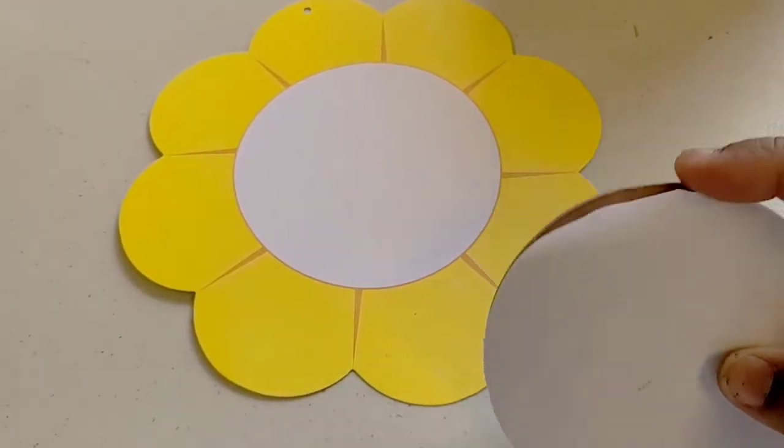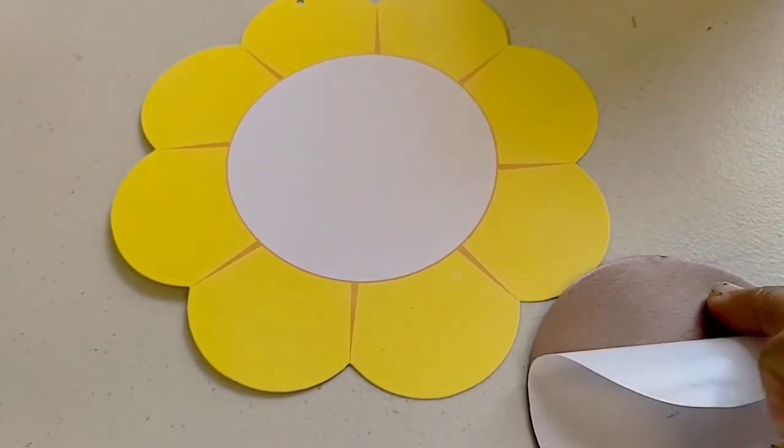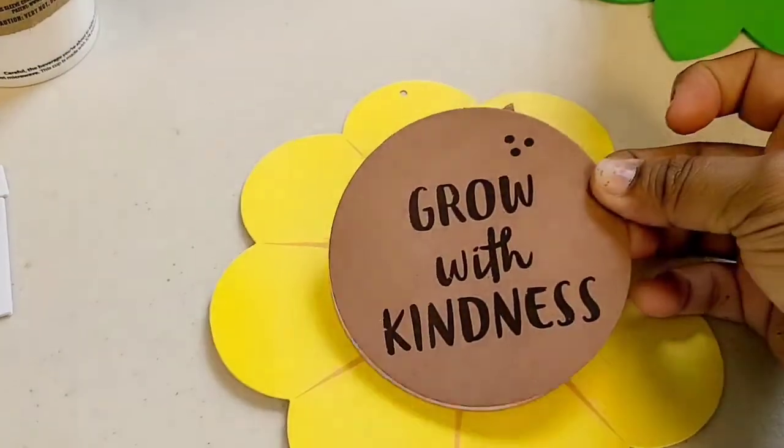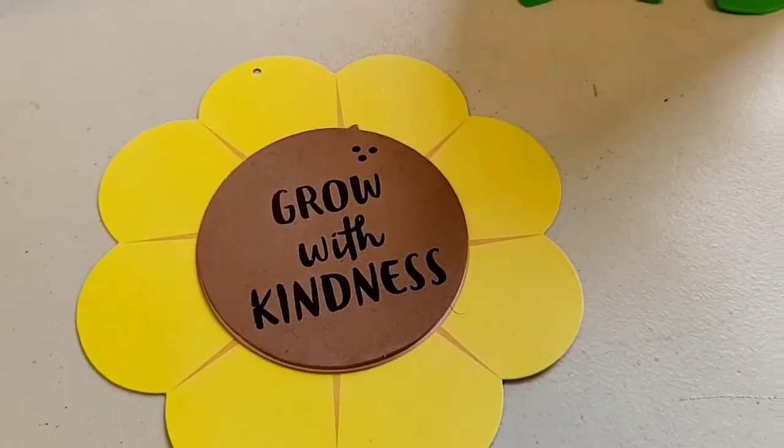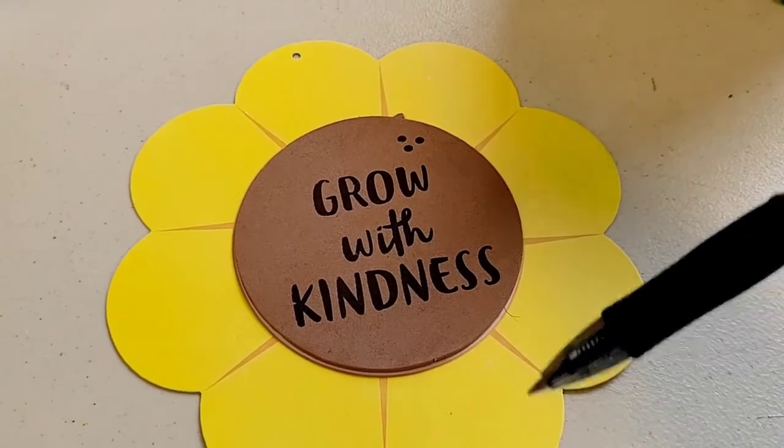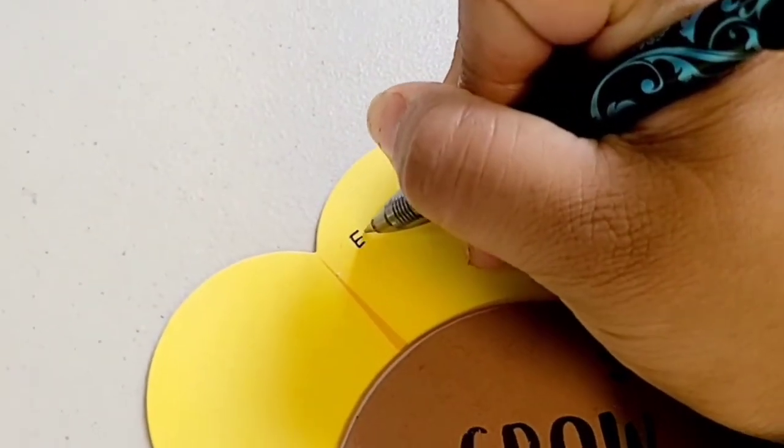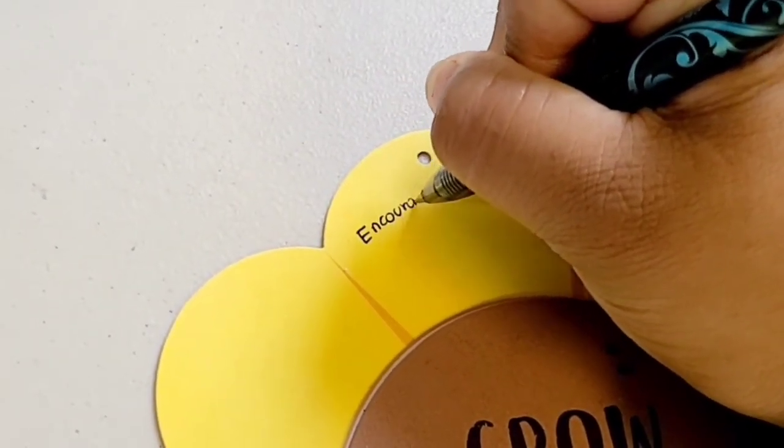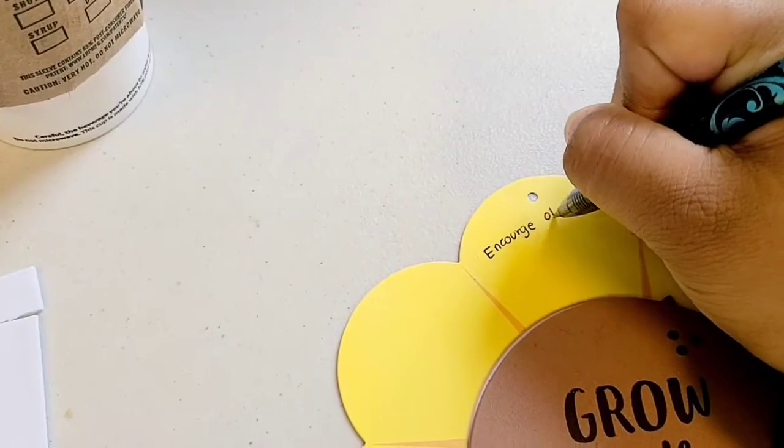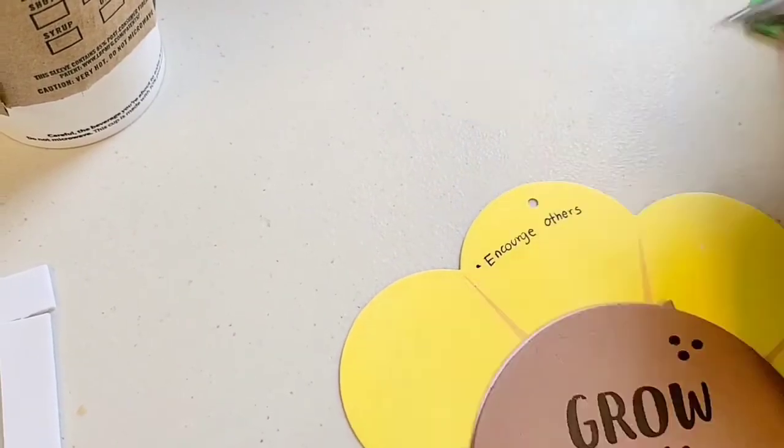Peel the paper on the back of the brown circle and put it on top of the sunflower. With the use of a pen, you can write different quotes about being kind to one another. Examples are encourage others.